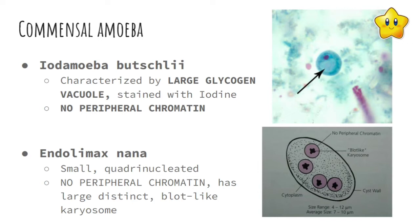Another commensal is Endolimax nana — it is small and quadrinucleated, with four nuclei. It contains no peripheral chromatin. It has a large distinct blob-like karyosome, which is the structure located in the center of the nucleus. Endolimax nana is characterized by this prominent blob-like karyosome, as shown in the illustration.